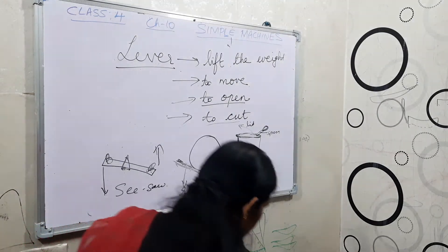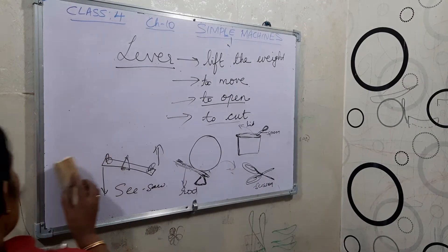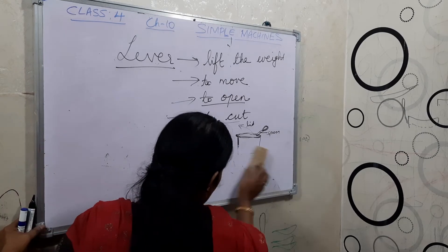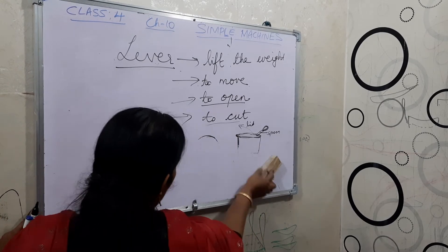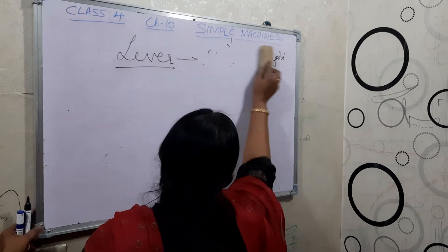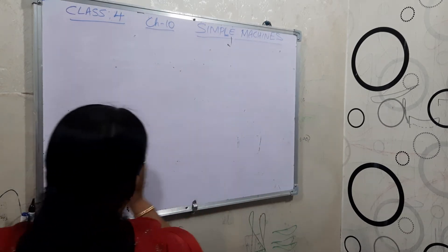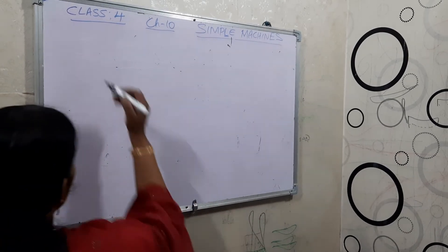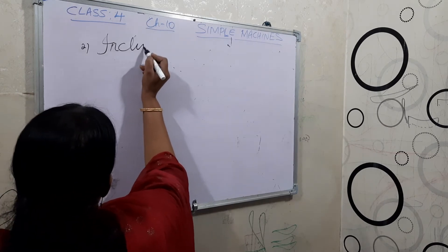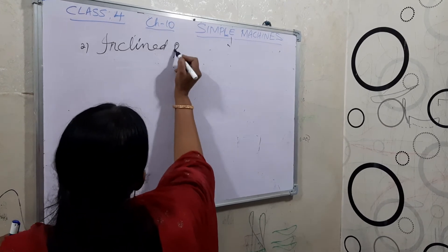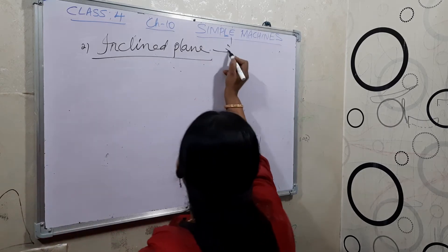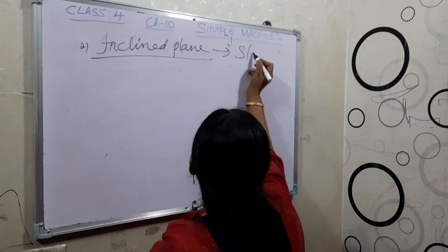Now coming to the next simple machine. The next simple machine is the inclined plane. What is an inclined plane? Inclined plane is simply a slope. It is a slope.